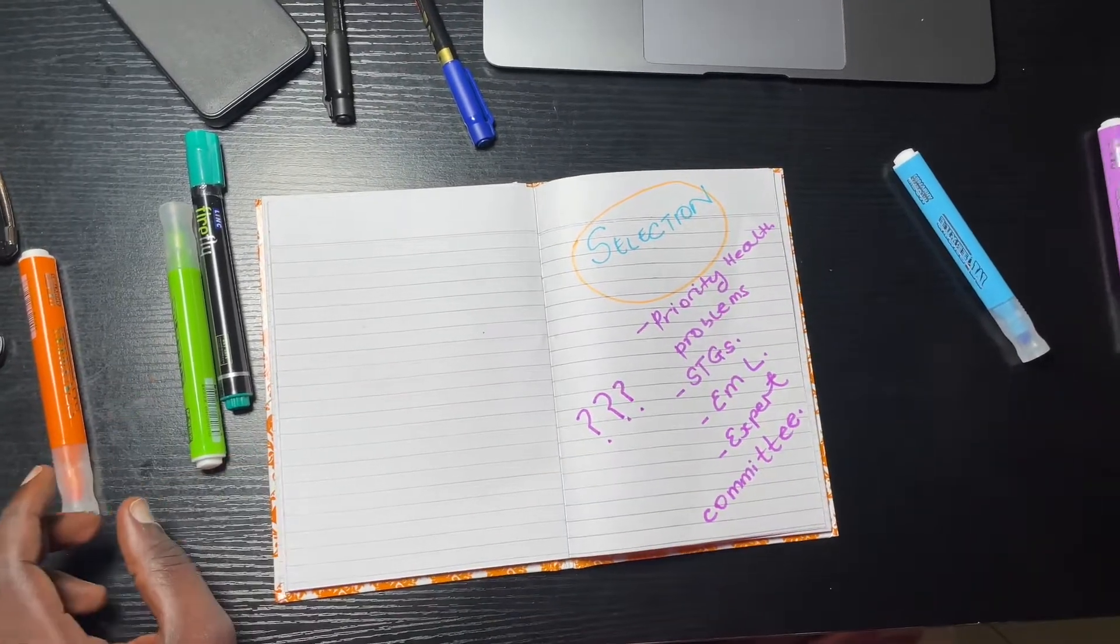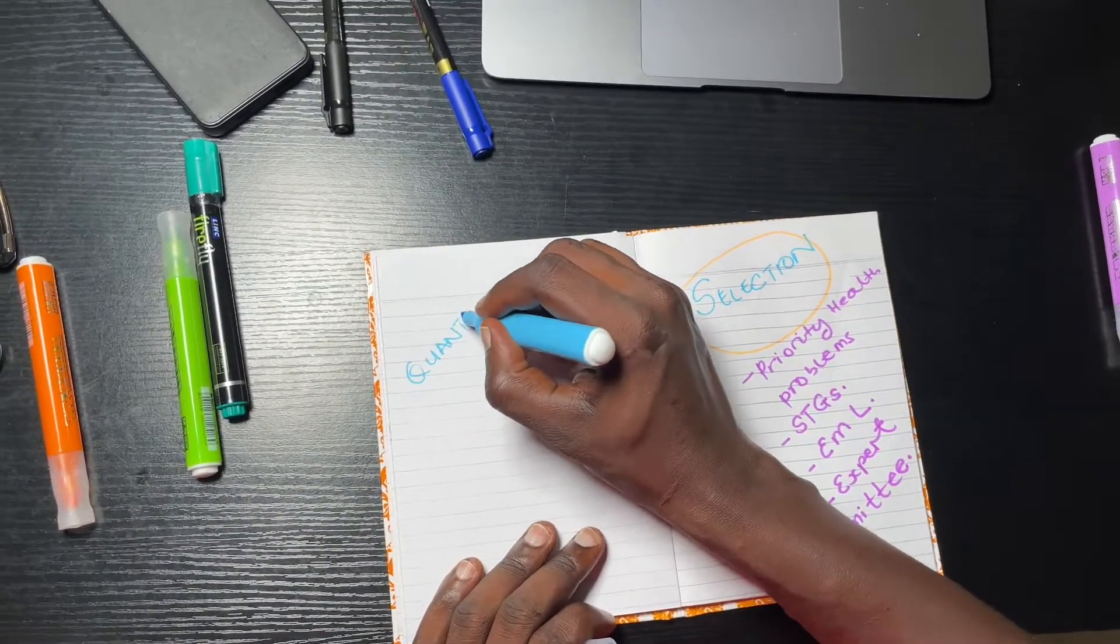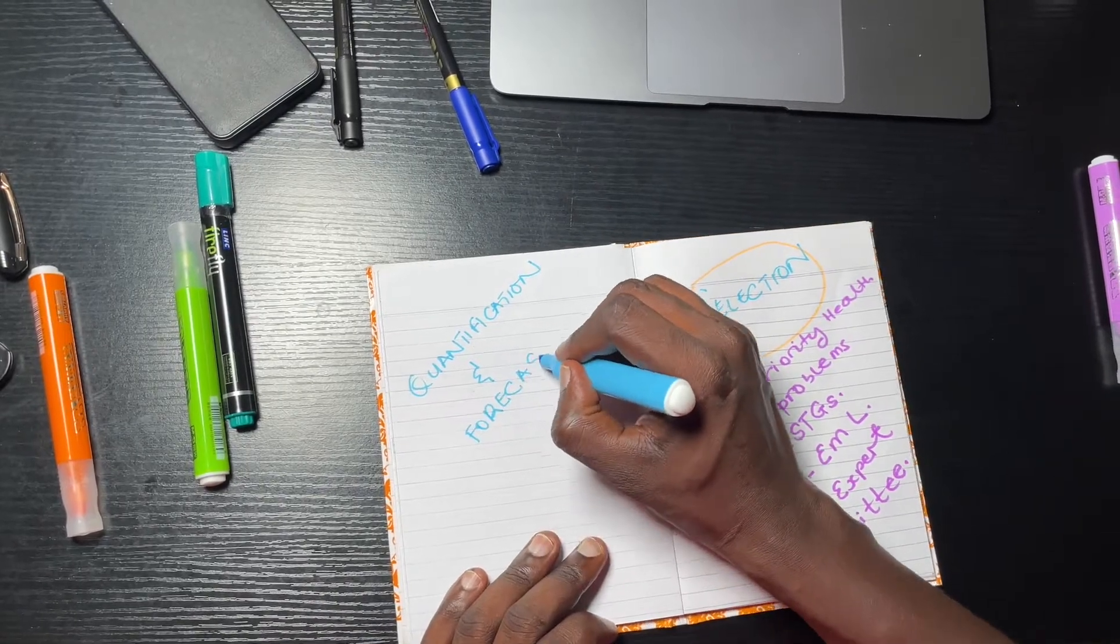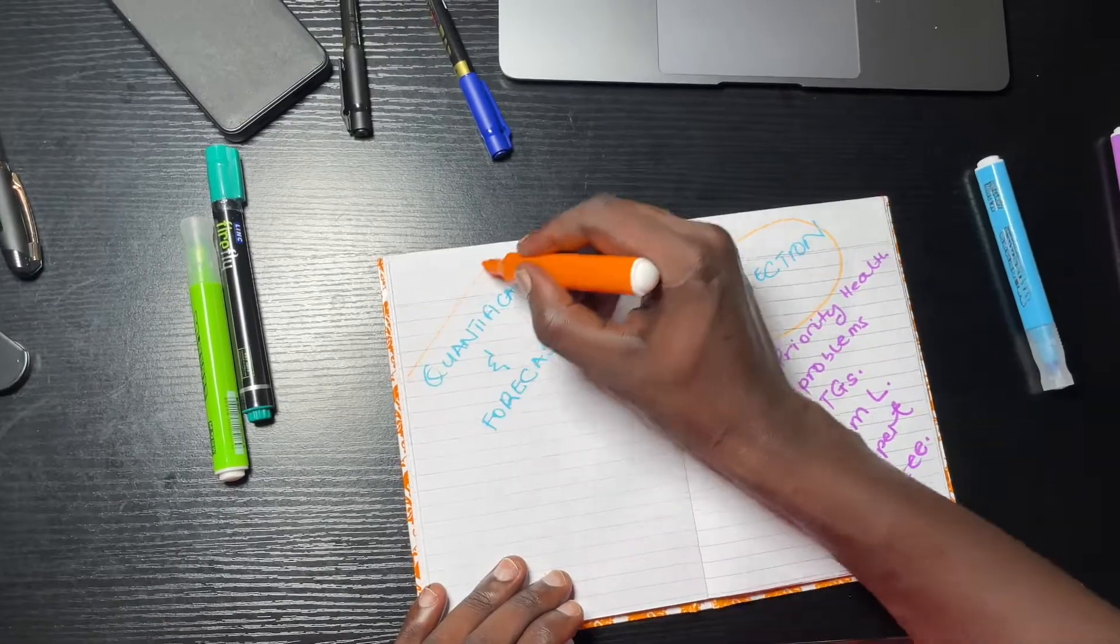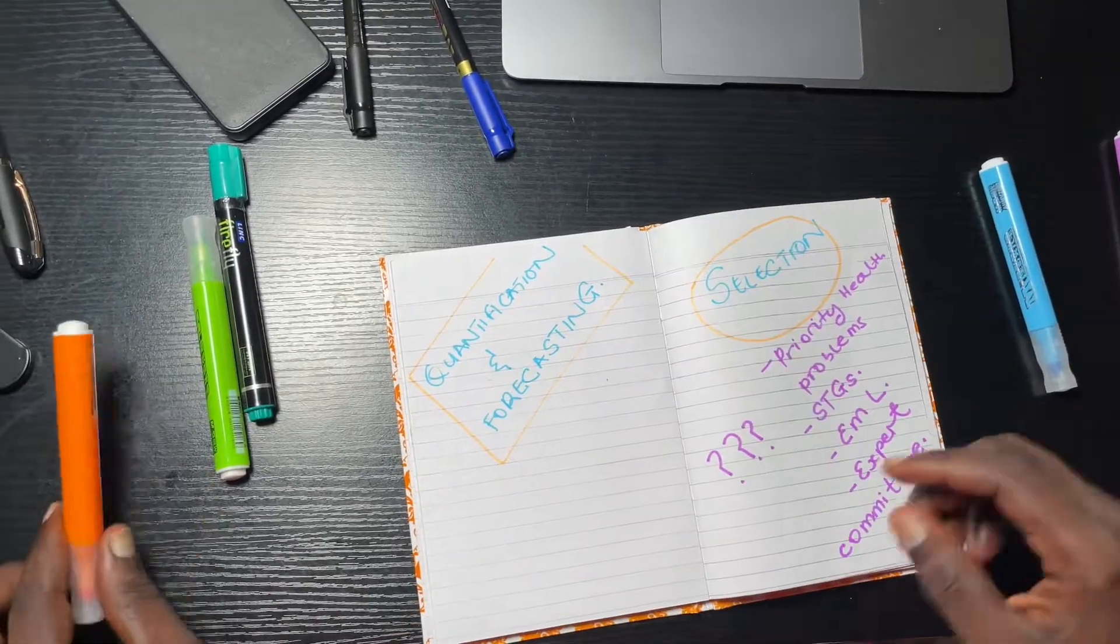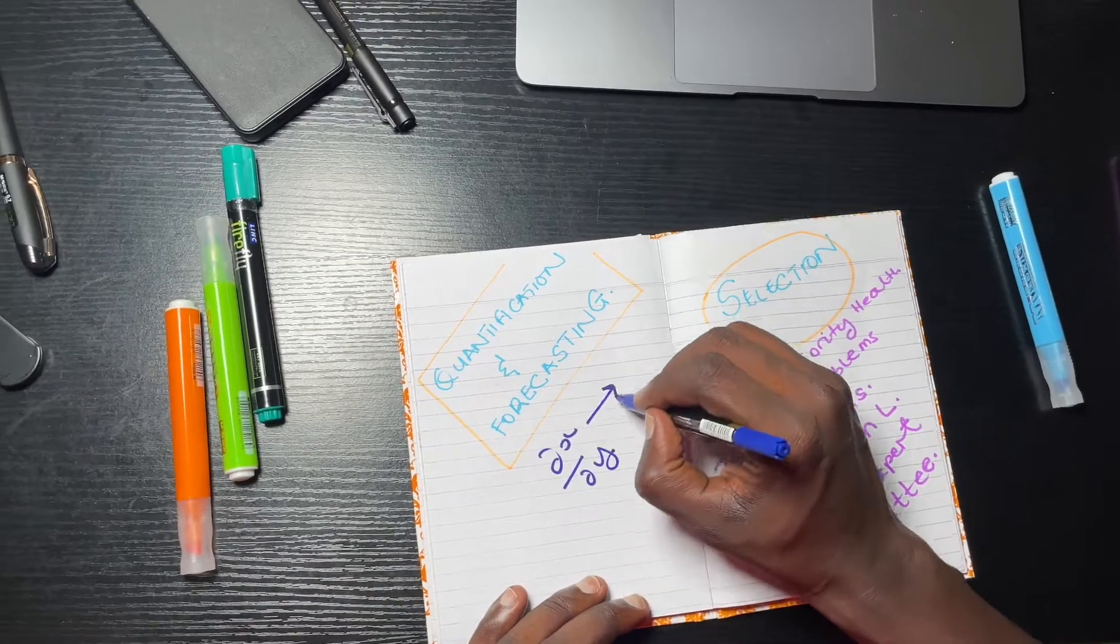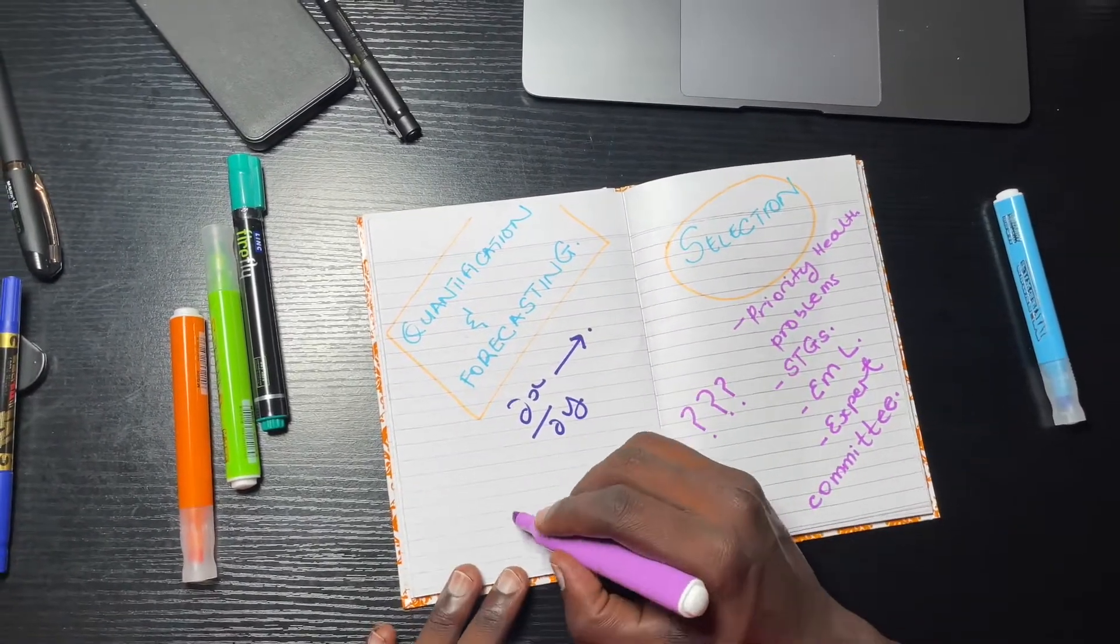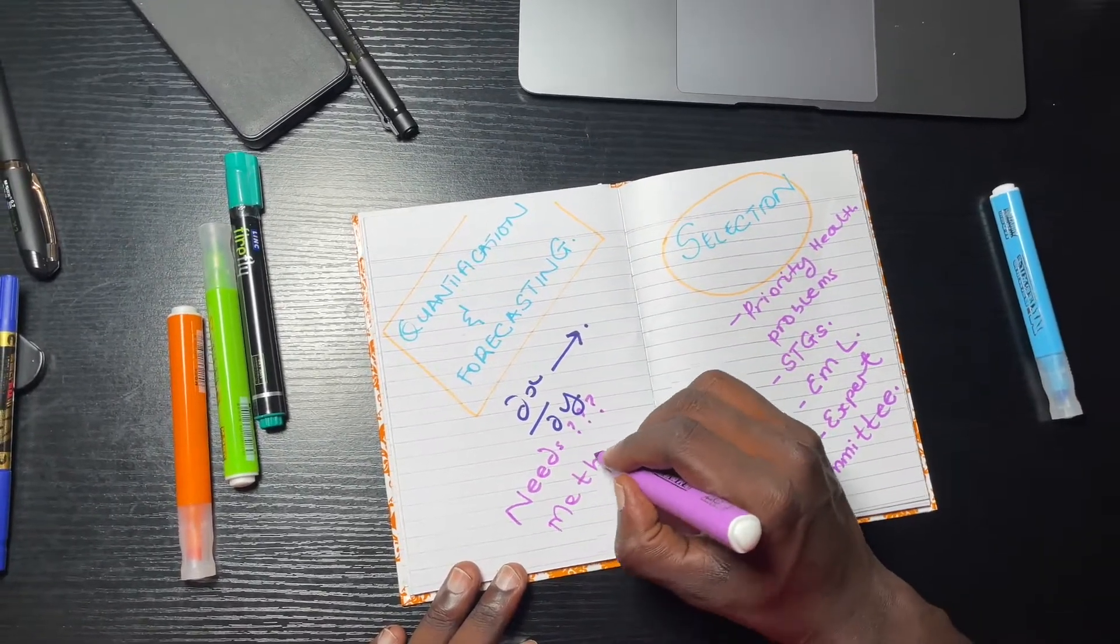The next step in the logistics management cycle is quantification and forecasting. In this step, very specific scientific methods are applied to determine the quantities of medicines and health supplies that are needed for programs and patients. It might answer questions like how much paracetamol do we need for a circumcision program? How much anti-malarials do we need for a malaria treatment program?